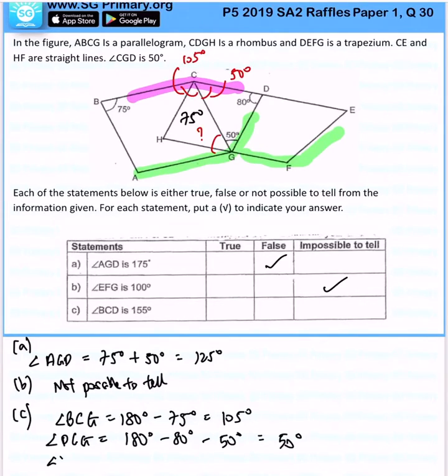So all in all, angle BCD, it is 105 degrees plus 50 degrees giving me 155 degrees. So that is the answer for this question.